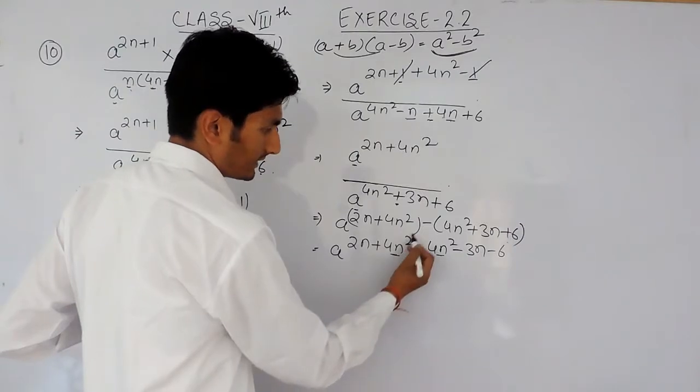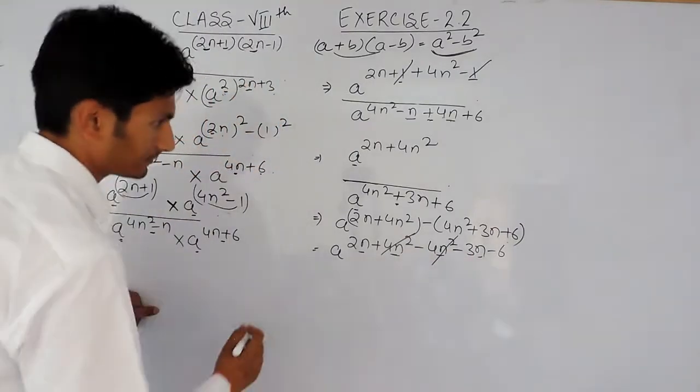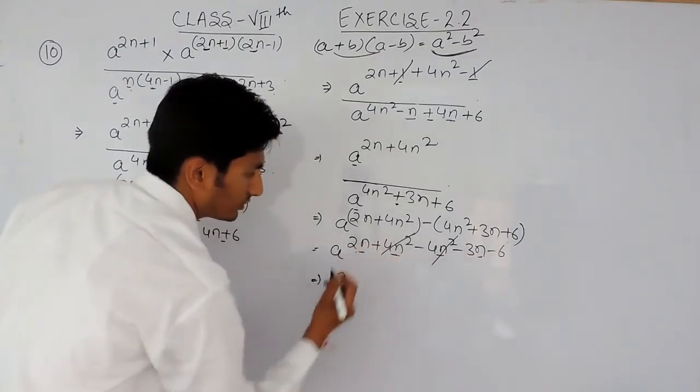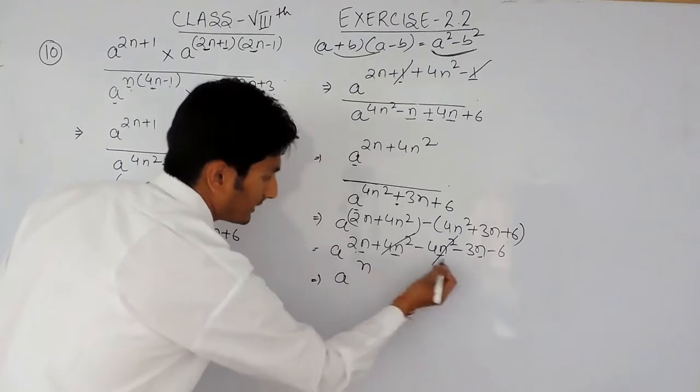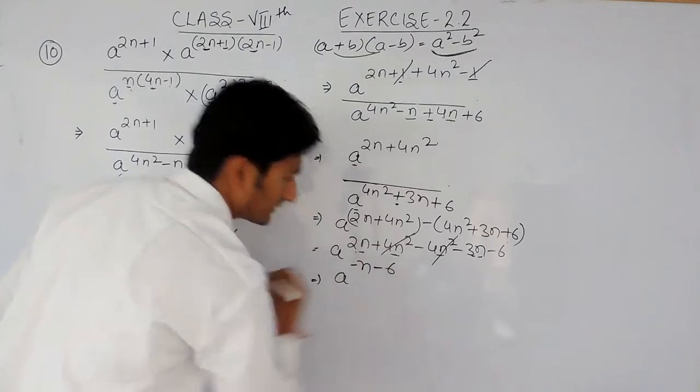Now, these two terms can be cancelled, these two can be solved. Plus minus is minus, so 3 minus 2 is 1, and with negative sign because greater value has negative sign, and minus 6.